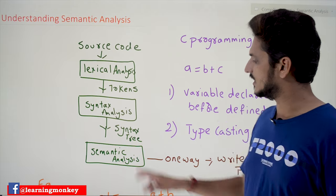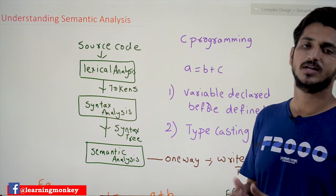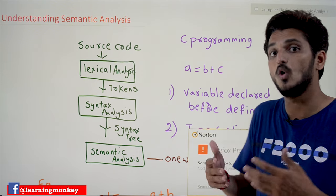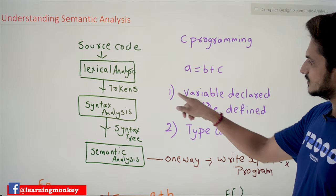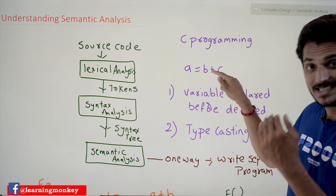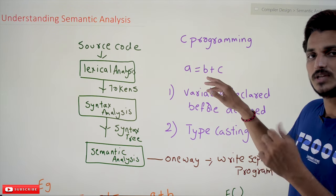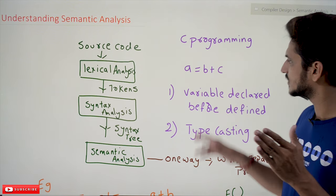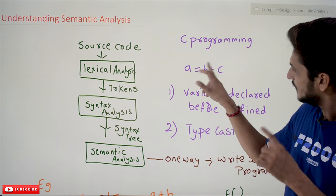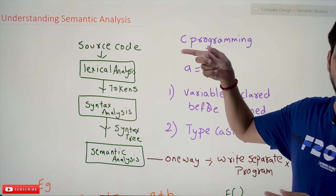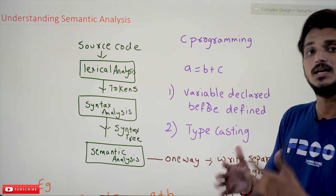Let's understand what we check in the semantic analysis phase, taking C programming language as an example with the expression a = b + c. Each language has its own semantic conditions. In C, whenever you are assigning a value to a variable, it should be declared before being defined — that is the condition we have to check. This condition is not present in Python, so conditions change based on the programming language.